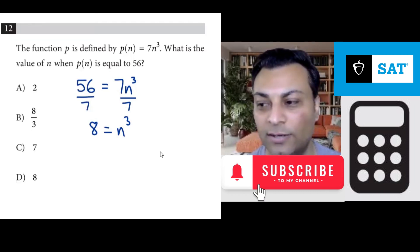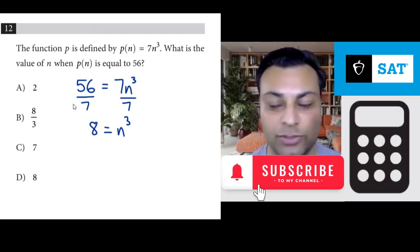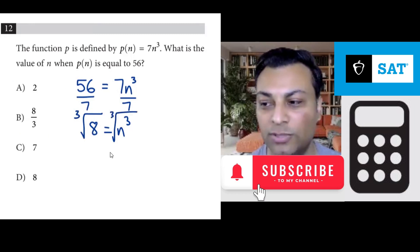And then from here you would cube root both sides. So you cube root this and cube root that. n³ cube rooted is back to n, and the cube root of 8.